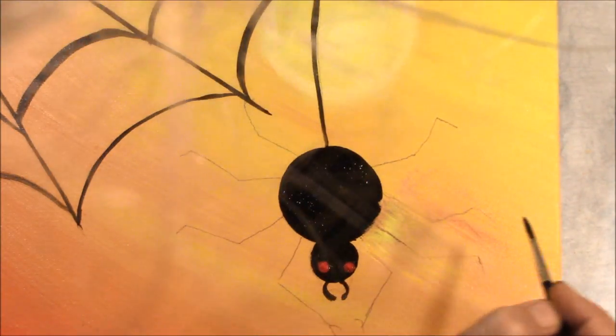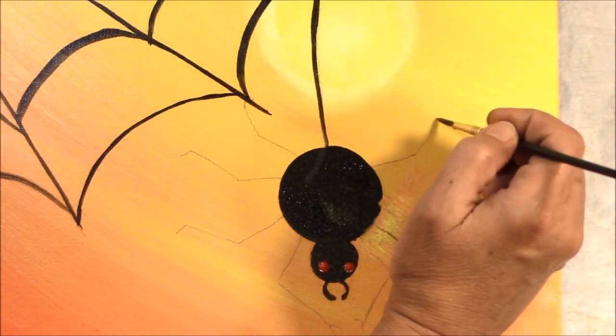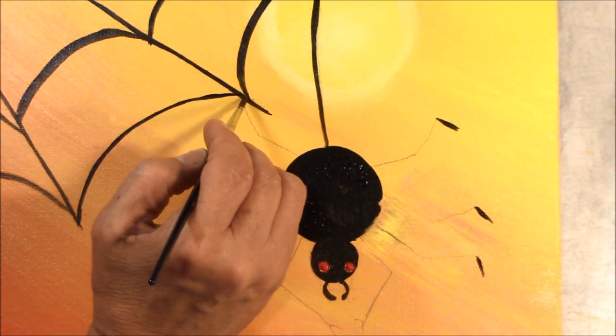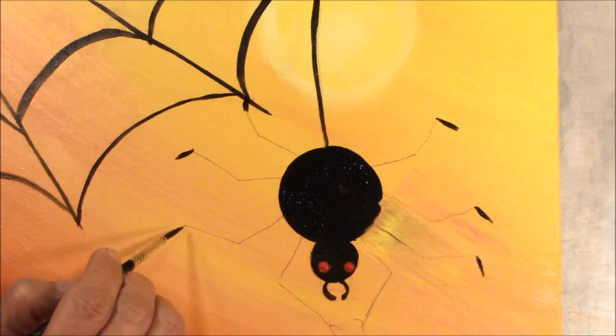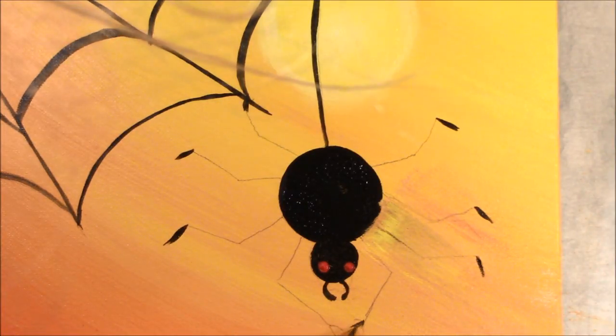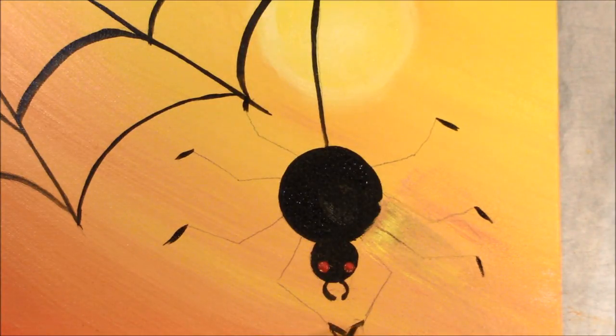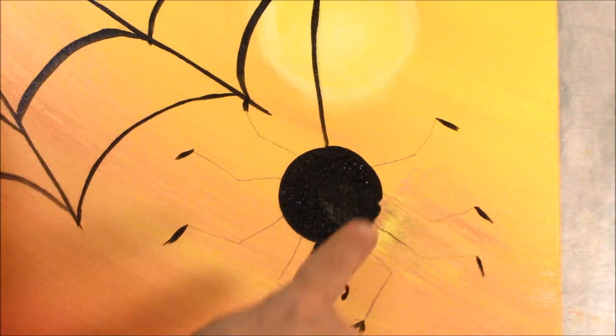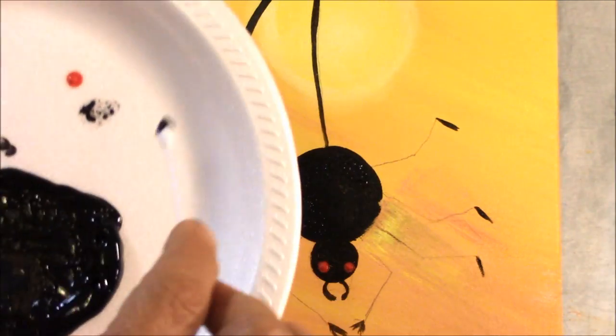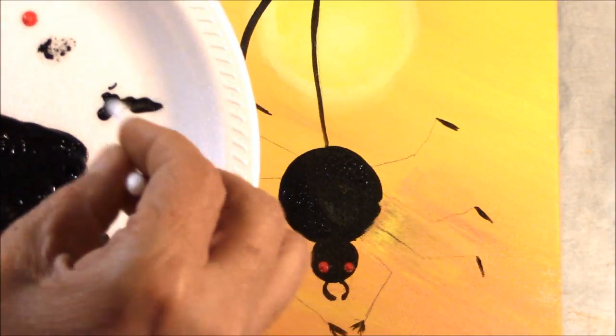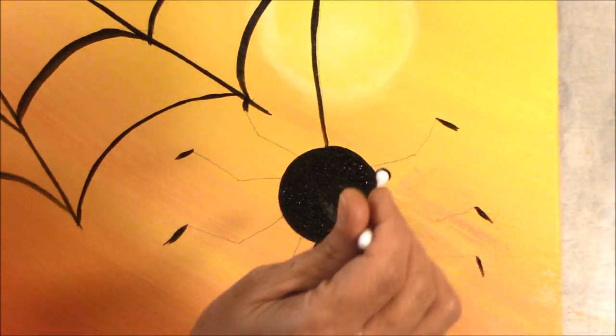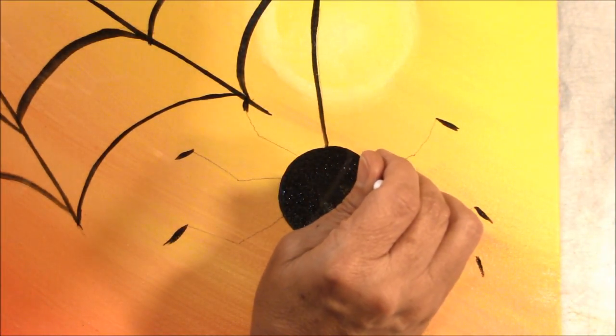I'm also going to do his little feet on the end of his little legs. Just the feet part. A little picture there. Now for the rest of his legs, I want... You can do the legs with the liner brush. But I'm going to use a Q-tip. And I'm going to get a nice little bit of paint there. Dab my Q-tip in. And just dab along the legs.